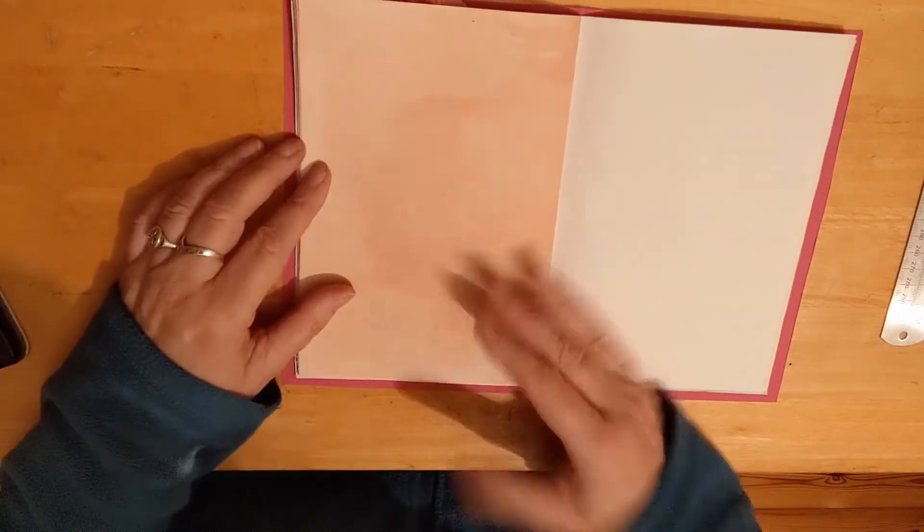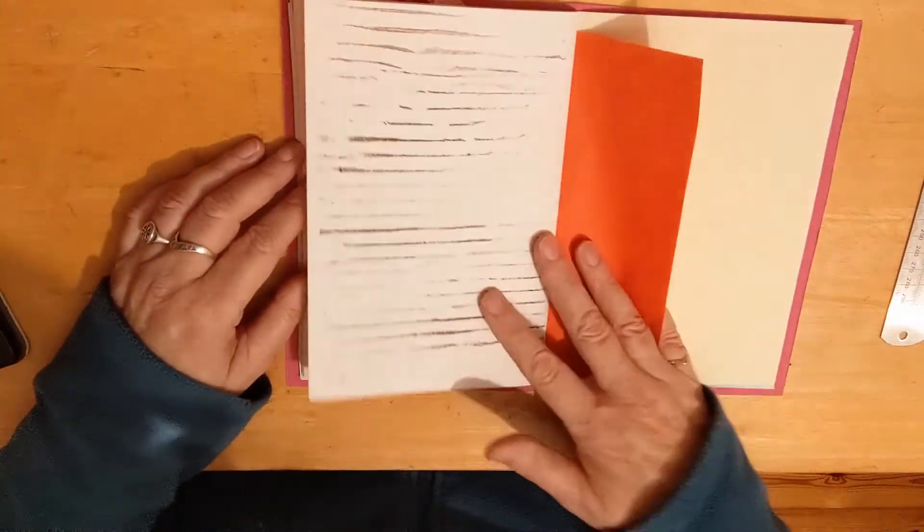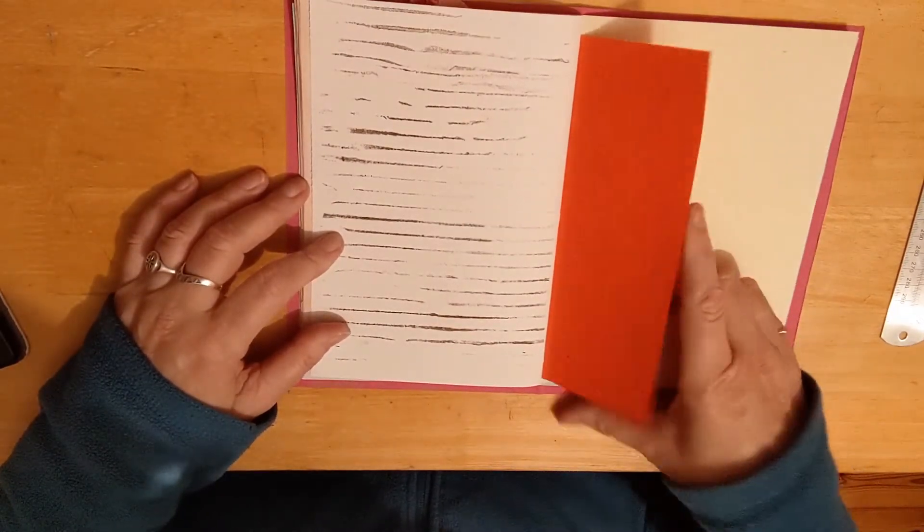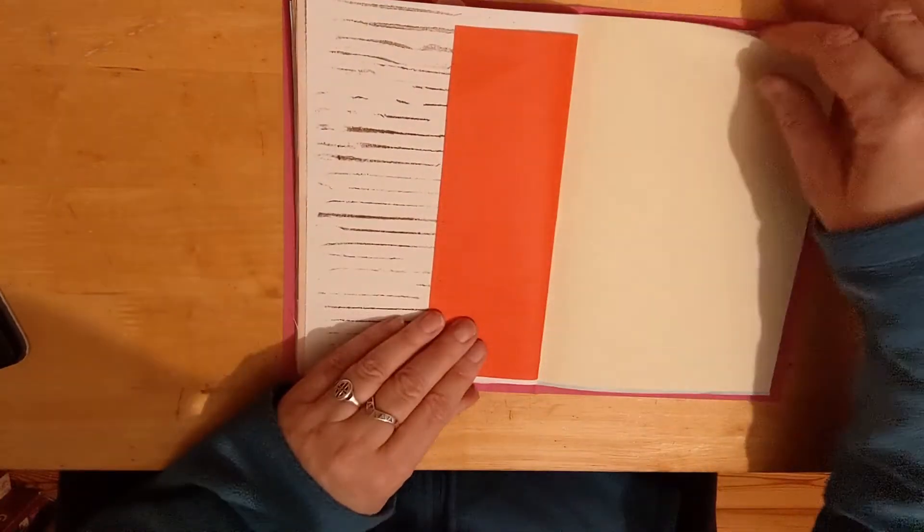And then you have the stenciled paper here again. That's the back of the red paper. Copier paper there, that's light paper.